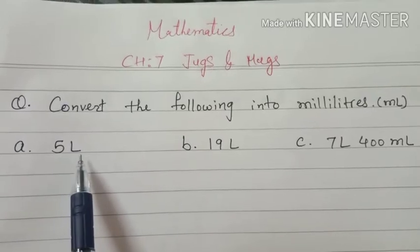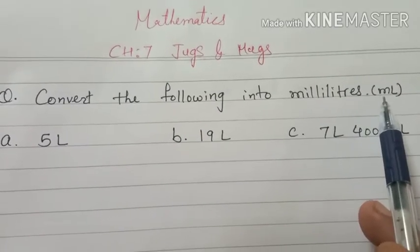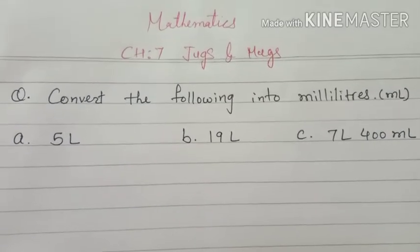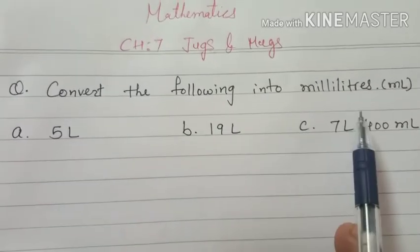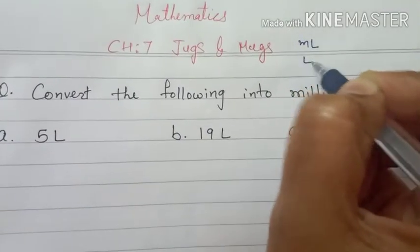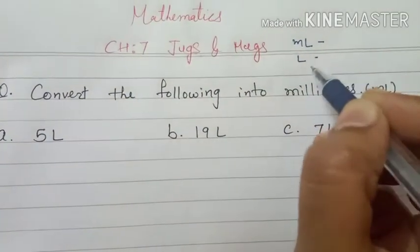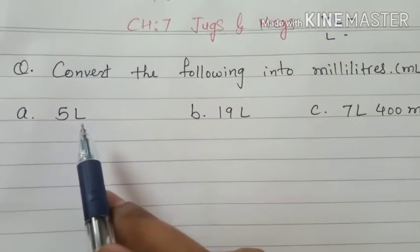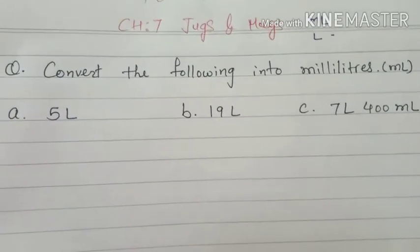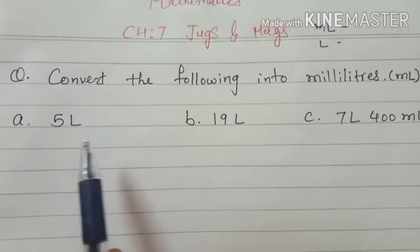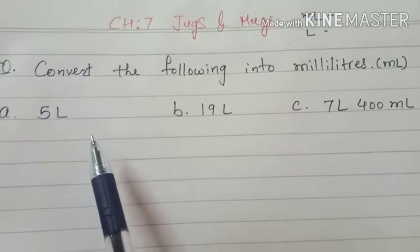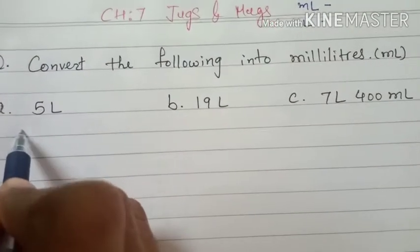Liter has to be converted into milliliter. Suppose the example is 5 liters. Every time we don't have the same unit — we sometimes need conversion also. So how to do the conversion? We have two standard units: milliliter and liter. Milliliter is the smaller unit and liter is the larger unit. For conversion from liter to milliliter, liter is the bigger unit and we want the answer in the smaller unit. So when we convert from bigger to smaller unit, we have to do multiplication.